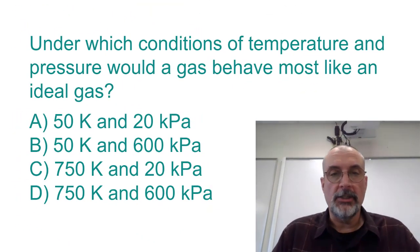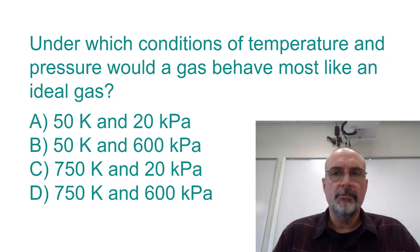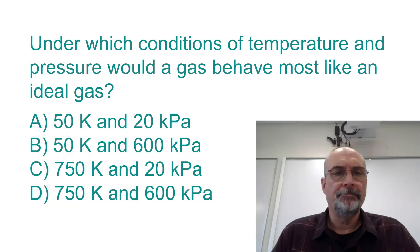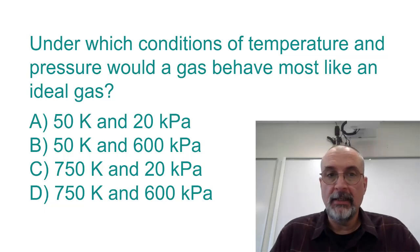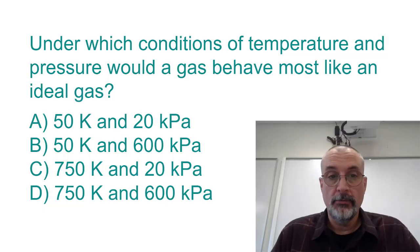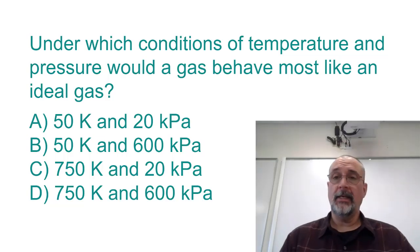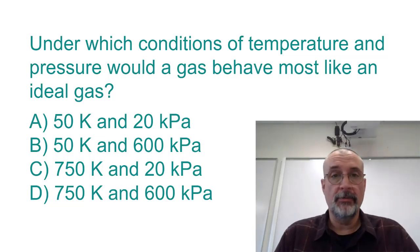Here's a practice problem: under which set of conditions — temperature and pressure — would a gas behave most like an ideal gas? Remember, real gases behave most like ideal gases at low pressure and high temperature. So the answer is C — high temperature, low pressure. That's really the key difference between real and ideal gases.